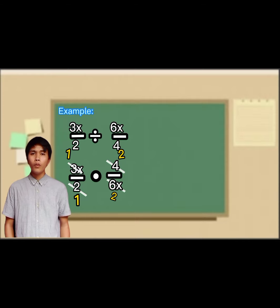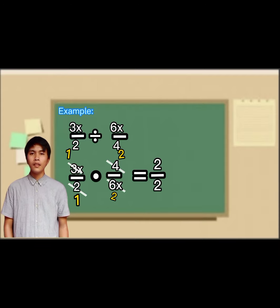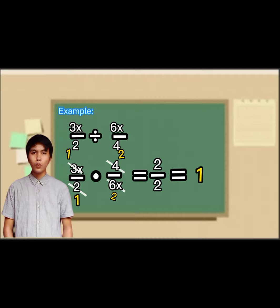Then we will proceed to the last step, which is to apply multiplication to obtain the answer. So, 1 times 2 is 2, then 1 times 2 is 2. Then 2 divided by 2 equals 1. So, our answer is 1.